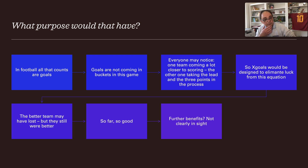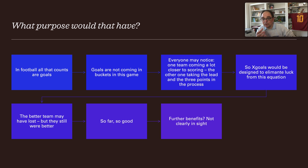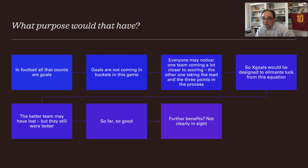What purpose does that have? In football, all that counts are goals, and goals don't come in buckets — an average of three goals per game would already be very good. Everyone may notice one team coming much closer to scoring while the other takes the lead. So x-goals are designed to eliminate luck from this equation.